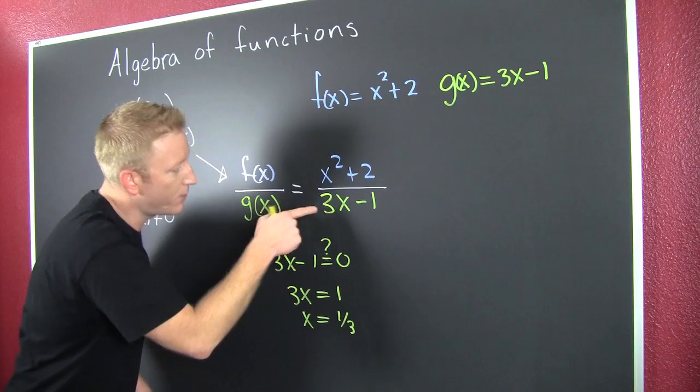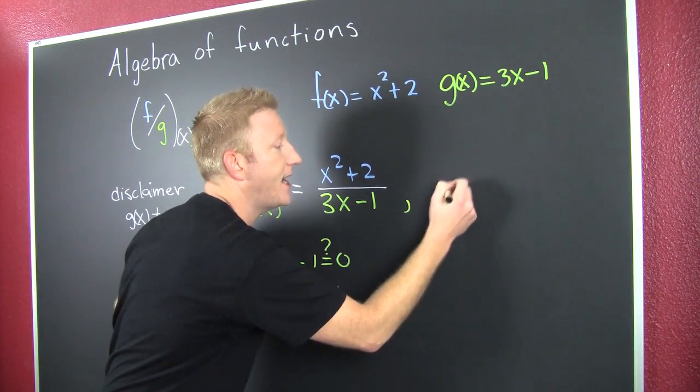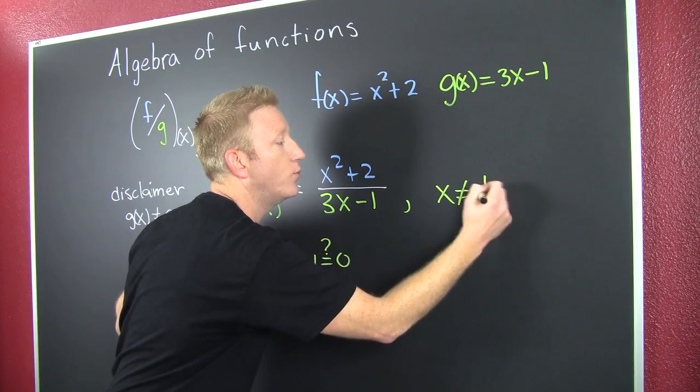It's not 1/3 because that's what would make that denominator zero. So we have to say that x cannot equal 1/3.